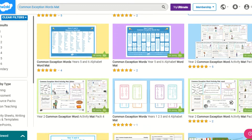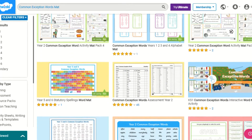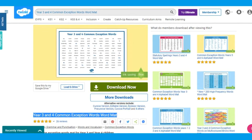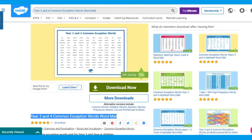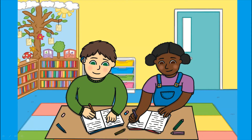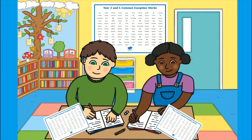Twinkl has a wide range of common exception word maps to support this learning. This Year 3 and 4 common exception word map features all Year 3 and Year 4 tricky words in alphabetical order. This word map is perfect for independent writing activities, to be put on display in your learning area, or to be kept on children's desks or even in workbooks as a handy reference and guide.